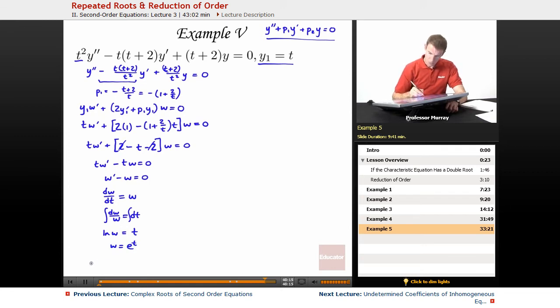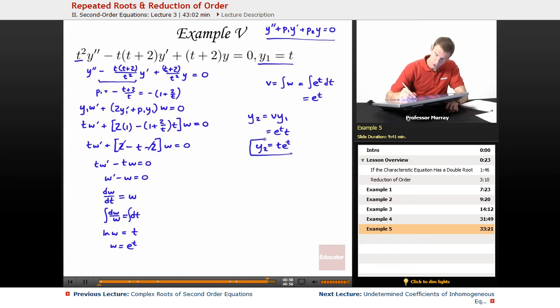From there, we try to find v, which is the integral of w, which is the integral of e to the t dt, which in this case is just e to the t itself. And finally, our y2 is v times y1. That's always the formula. So v times y1 is e to the t times t, which I'll write as t e to the t. That is our second solution to the differential equation.